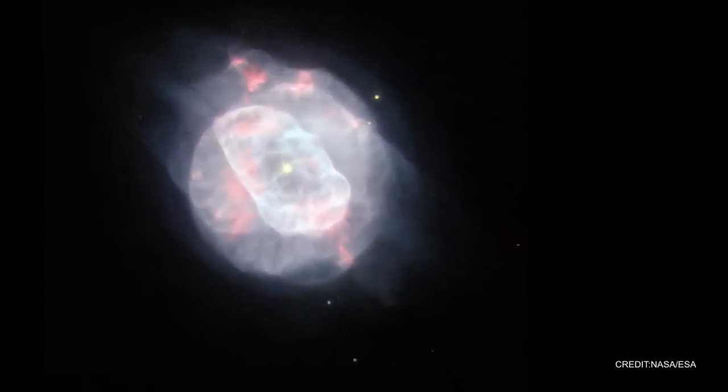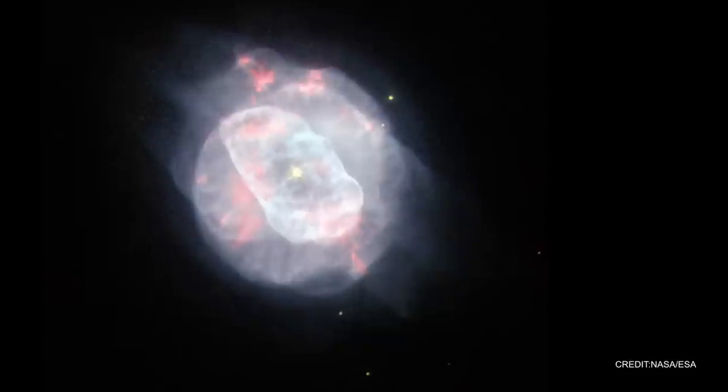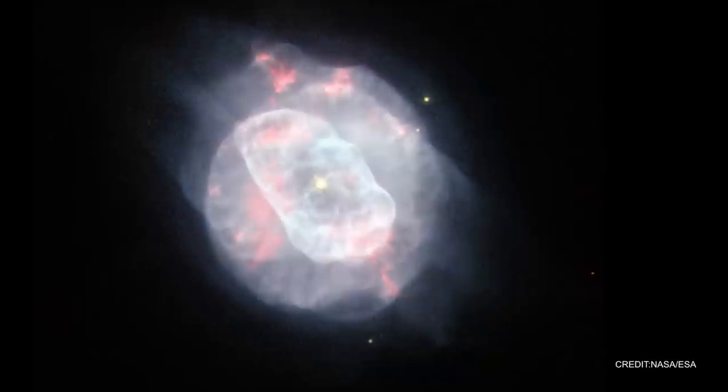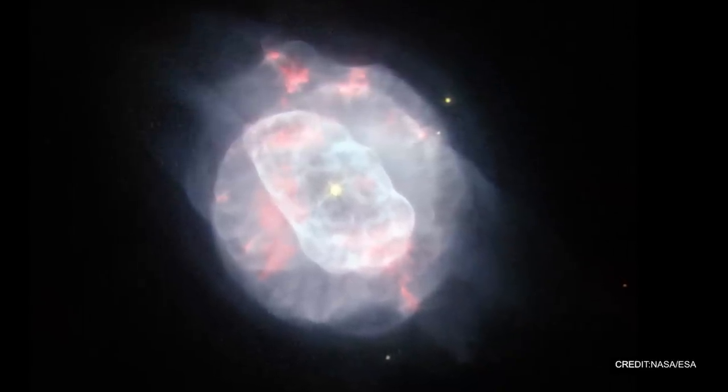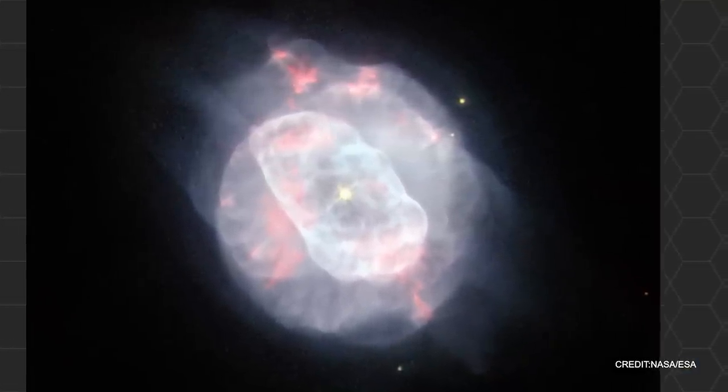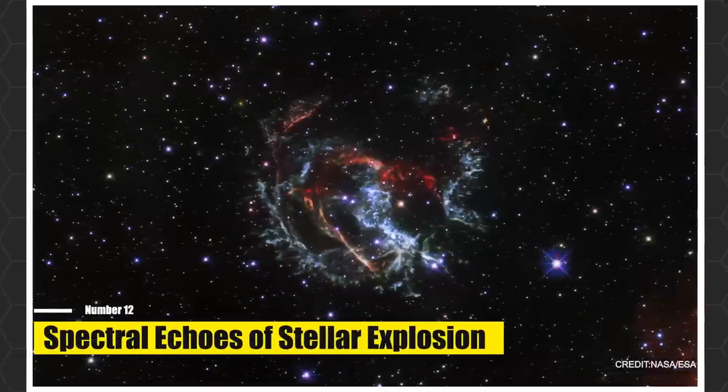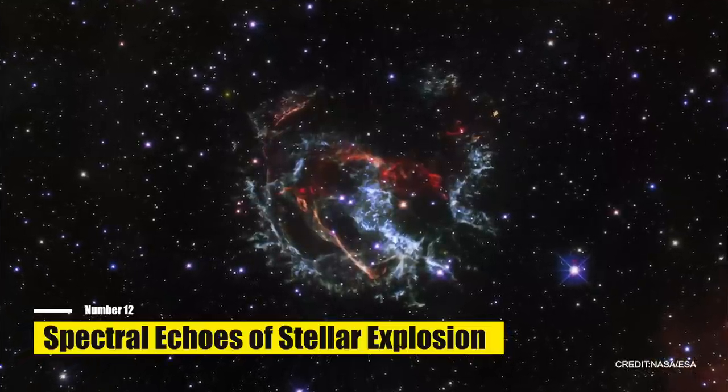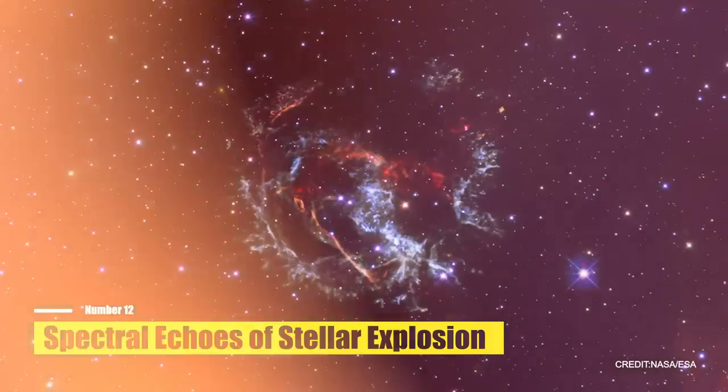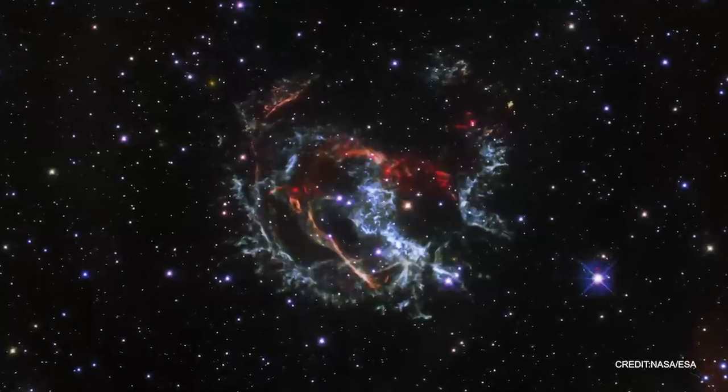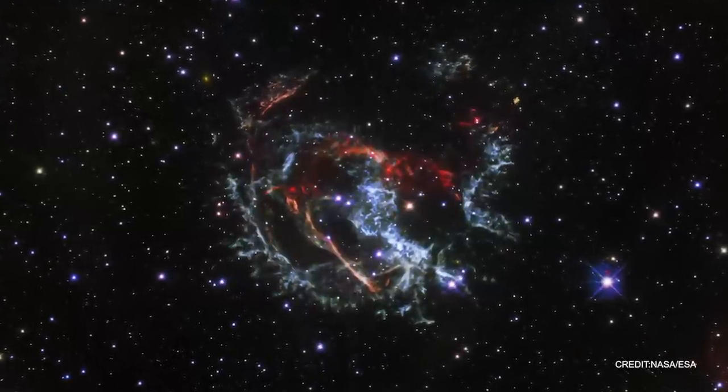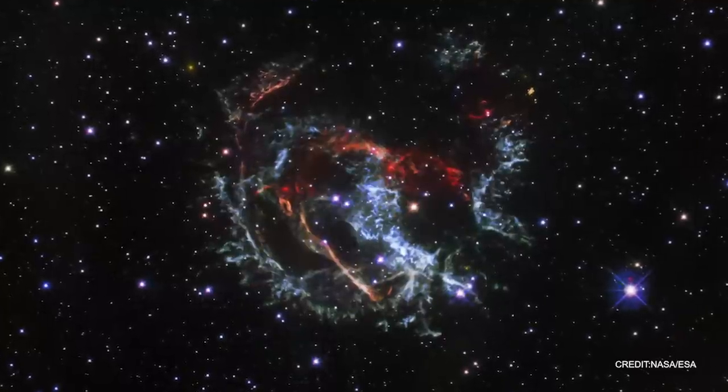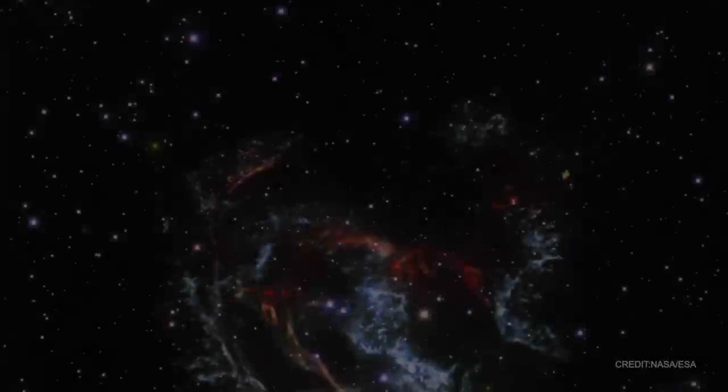Number twelve, Spectral Echoes of Stellar Explosion, Supernova Remnant 1E0102. Within the cosmic expanse, dramatic changes occur when stars meet their ultimate demise. The Small Magellanic Cloud—our Milky Way's satellite galaxy, approximately 200,000 light-years away—presents us with a stunning display of such a celestial event. Here we find 1E0102, a supernova remnant serving as the ghostly aftermath of a star that erupted in a spectacular explosion ages ago. A supernova remnant is essentially the leftover traces of a supernova, or a powerful star explosion.